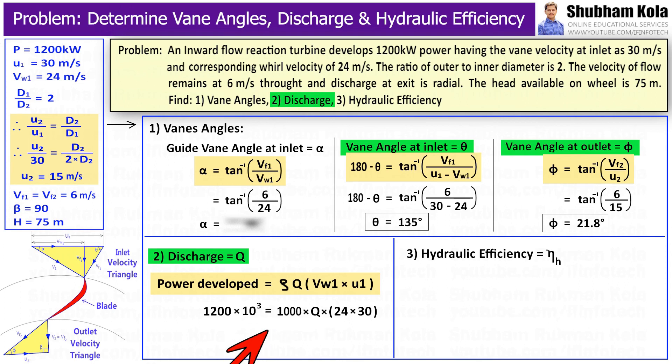And here, density of water is 1000, and vw₁ is 24, and u₁ is 30. So by calculating this, we will get discharge Q equal to 1.667 m³/s.